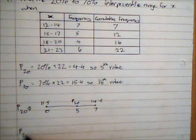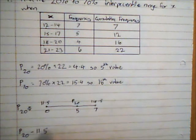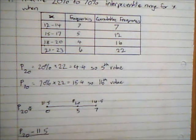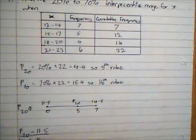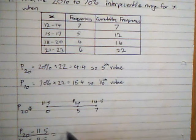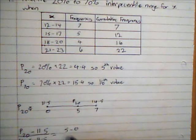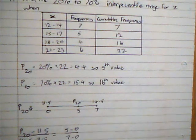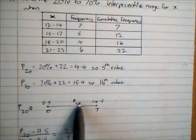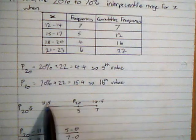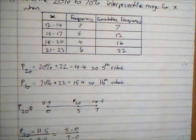So then P20 minus 11.5 over 14.5 minus 11.5 is equal to 5 minus 0 over 7 minus 0. And that is how far there is between P20 and the start of the first group, divided by the interval of that first group.